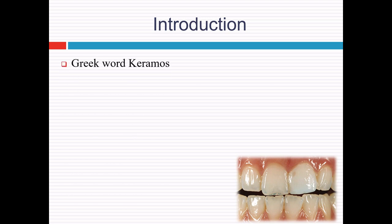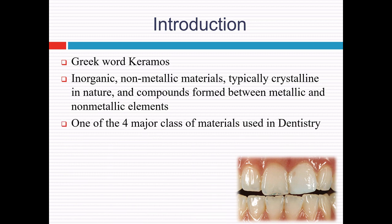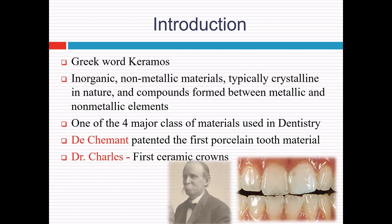The word ceramics is derived from the Greek word 'keramos' which means burnt stuff, meaning the material is produced by burning or firing. The American Ceramic Society has defined ceramics as an inorganic non-metallic material, typically crystalline in nature, formed as compounds between metallic and non-metallic elements such as aluminium-oxygen and calcium-oxygen. Ceramic represents one of the four major classes of materials used for reconstruction of decayed, damaged, or missing teeth — the other three being metals, polymers, and composites. It was French surgeon Nicolas Dubois de Chemin who patented the first porcelain tooth material, and Dr. Charles Land who patented the first ceramic crowns in 1903.